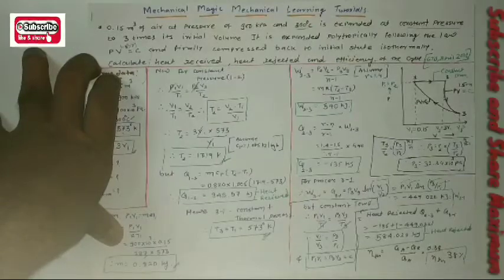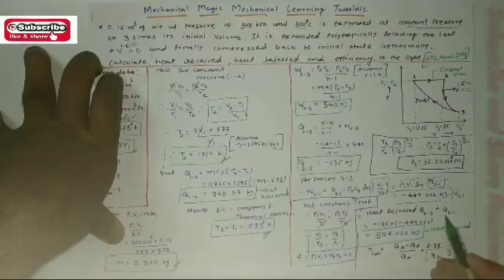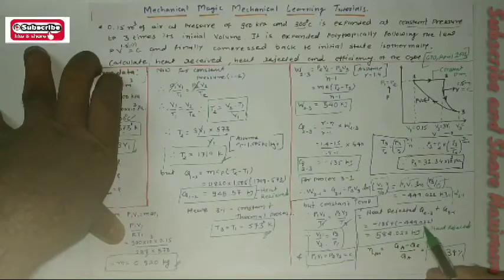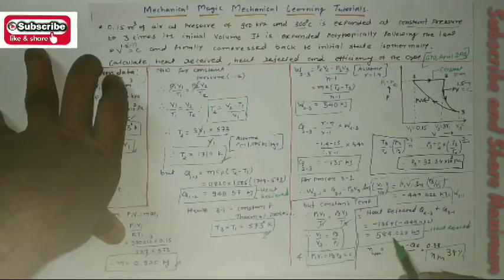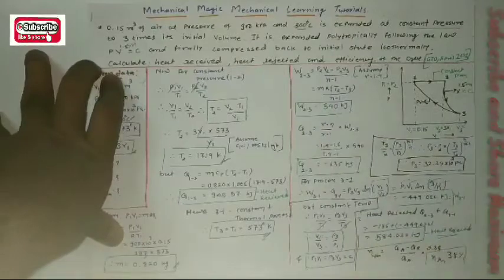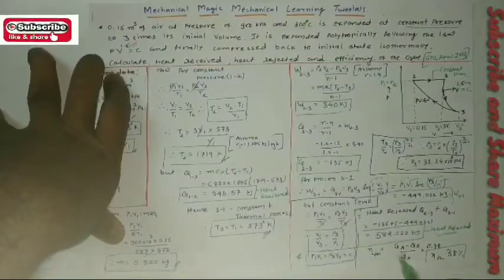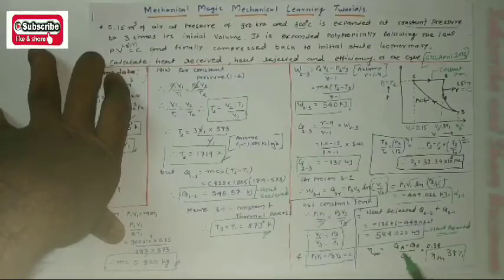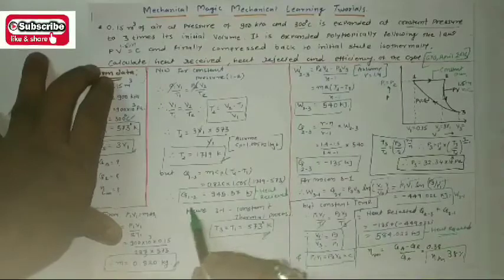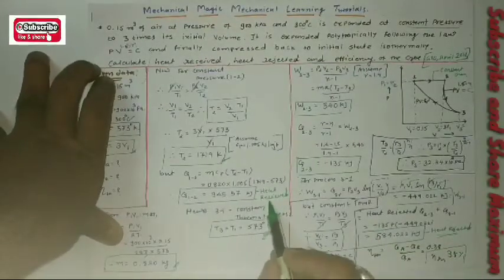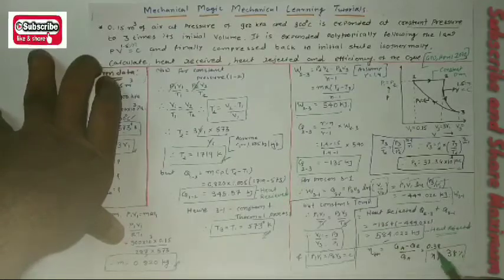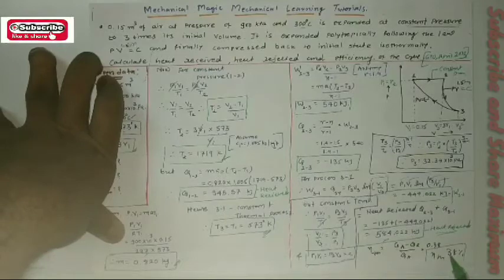Total heat rejected by the system equals Q₂₃ + Q₃₁ = −135 + (−449.025) = −584.022 kJ. For the thermal efficiency of the cycle: η = (QA − QR) / QA, where QA = 945.57 kJ (heat applied) and QR = 584.022 kJ (heat rejected). The efficiency = 0.38, or 38%.